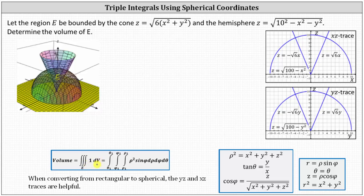In this case, though, we'll be using spherical coordinates. When using spherical coordinates, recall that dV is equal to rho squared sine phi d rho d phi d theta. It's often helpful to also determine the x, y, and z traces when converting from rectangular to spherical coordinates to help determine the limits of integration.